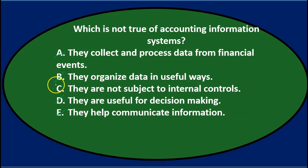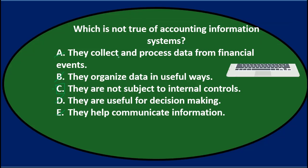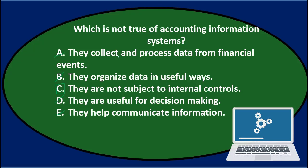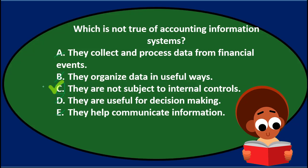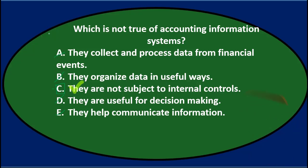By process of elimination, C sounds like the most relevant choice — they are not subject to internal controls. Within the accounting information system, we would want to implement internal controls to safeguard against errors. So the answer is C: they are not subject to internal controls.